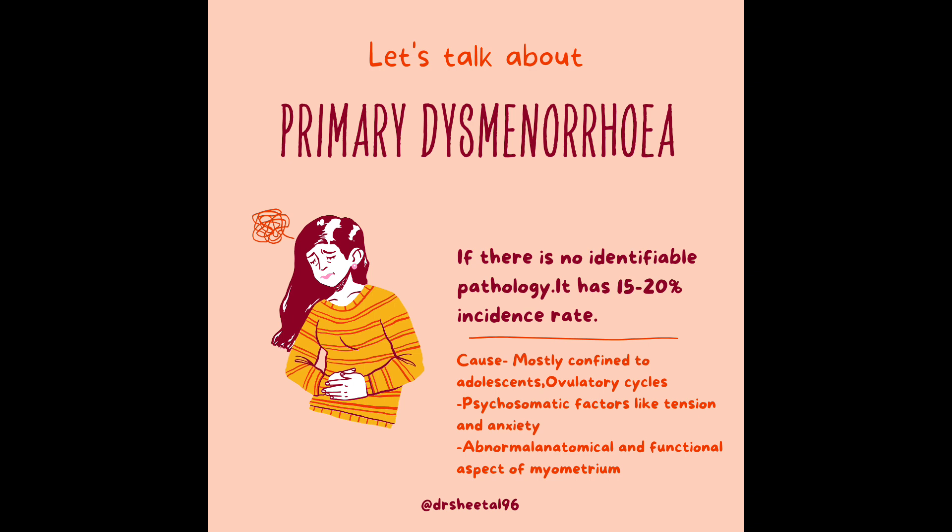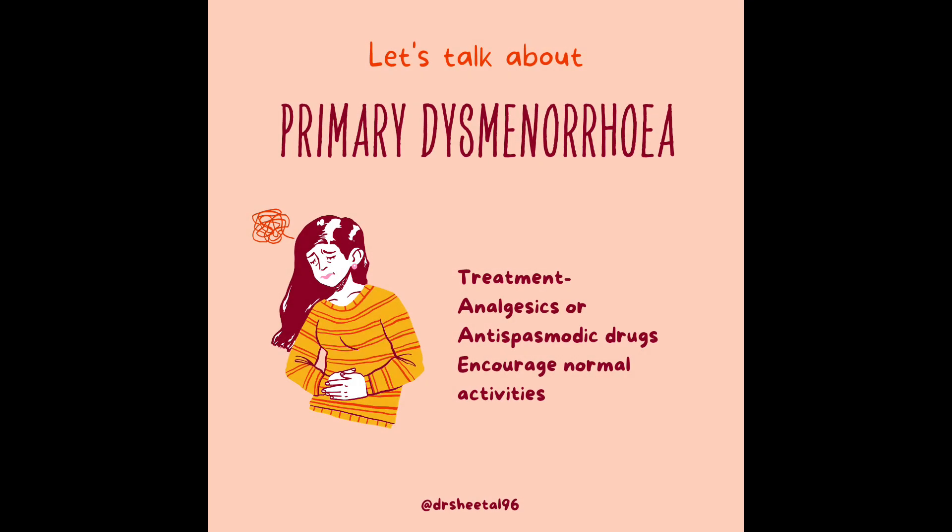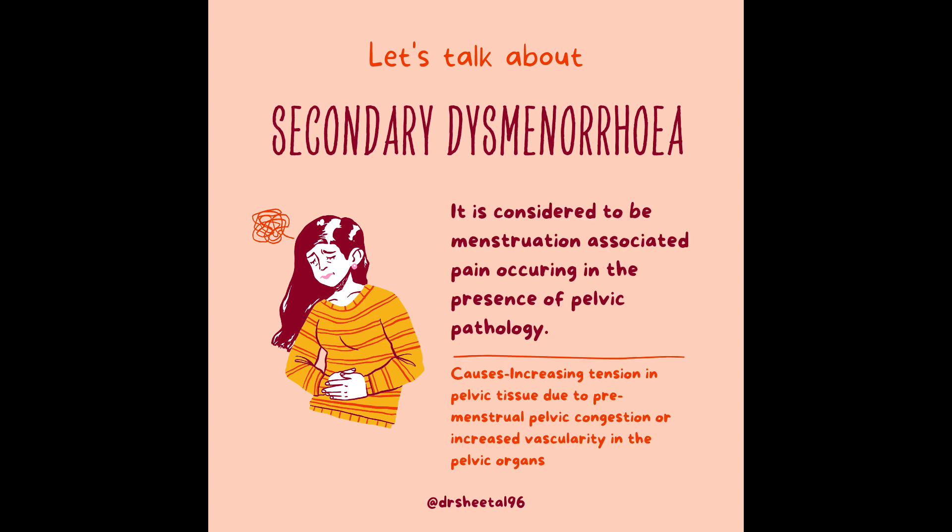Primary dysmenorrhea refers to painful menstruation with no identifiable pathology. It has a 15 to 20 percent incidence rate. Causes include cycles mostly confined to adolescence, ovulatory cycles, psychosomatic factors like tension and anxiety, and abnormal anatomical and functional aspects of the myometrium. Treatment involves analgesic or antispasmodic drugs that encourage normal activities.